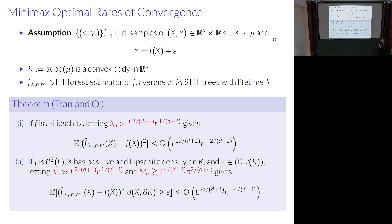Two related observations about these rates of convergence: first, as an artifact of the general function classes chosen, these rates suffer from the curse of dimensionality — if dimension d is large, the rates are very slow. These are the best rates we can achieve for the worst case over these general function classes. Second, because these are the best achievable rates, the rate itself doesn't depend on the directional distribution — for any fixed directional distribution, you get the minimax optimal convergence rate. However, the big-O constants absolutely do depend on the directional distribution.